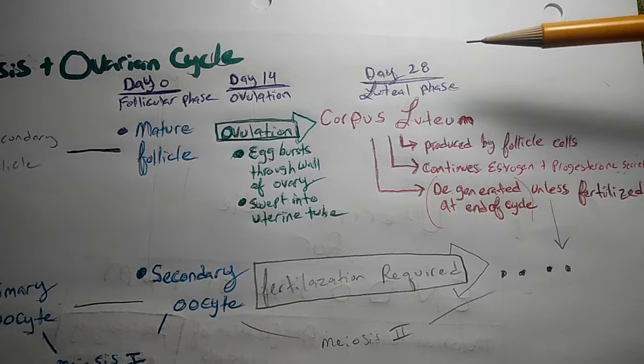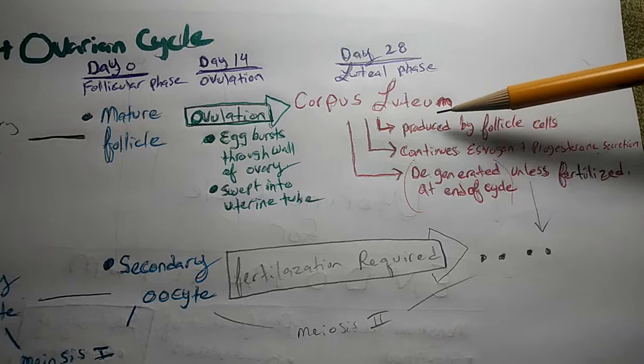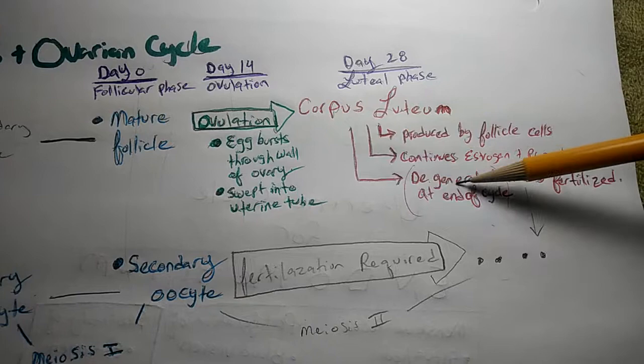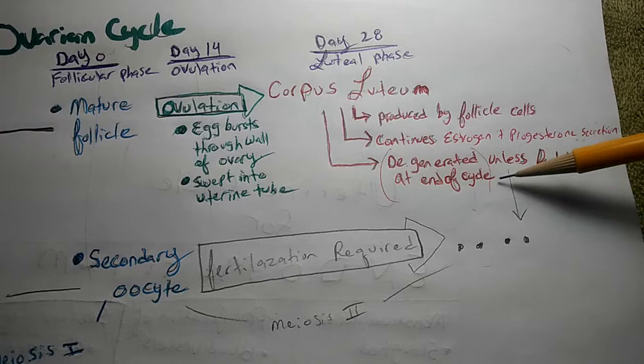It is called the luteal phase. The corpus luteum particularly, what it does, it is produced by the follicle cells. The corpus luteum continues to secrete estrogen and progesterone. The corpus luteum degenerates at the end of cycle unless it is fertilized, hence the arrow for fertilization.